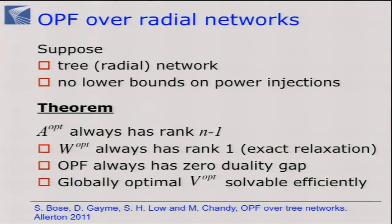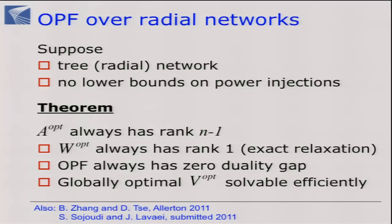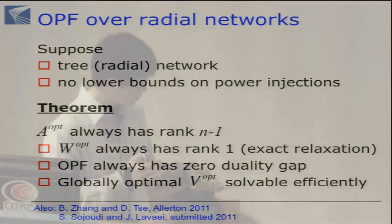If the network is a tree, everything works — his condition is always satisfied under some additional conditions. This result was presented by Bose and others; David C. and his students, working in a different context, came to the same conclusion using the same technique; and also Javad and Somayat. So essentially, if you have a tree, everything is fine. You can also generalize: for a QCQP over a tree, there's a slightly more general condition. The key message is that for radial networks, OPF is simple to solve.